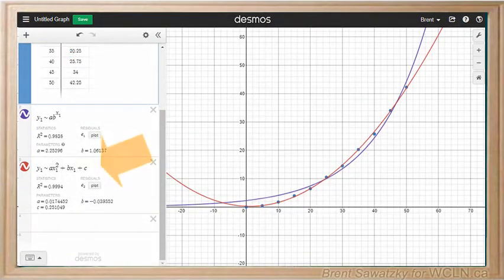y1 equals a x1 squared plus b x1 plus c. And we see that that looks even better.